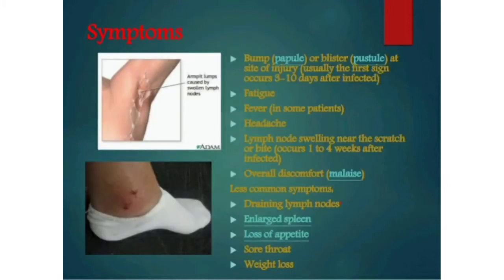The symptoms of CSD: first is a bump — also known as a papule — or a blister that contains pus, known as a pustule, at the site of injury where the cat scratch occurred. This is usually the first sign and occurs within three to ten days after infection. Next you feel fatigue, fever, and sometimes headache. Lymph node swelling can also be found near the scratch or bite, generally one to four weeks after infection.